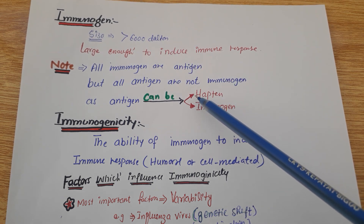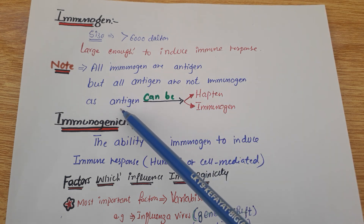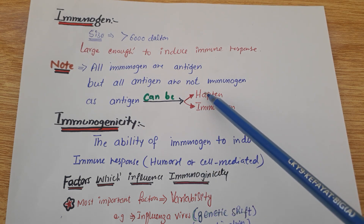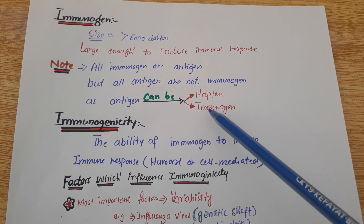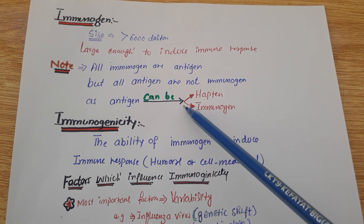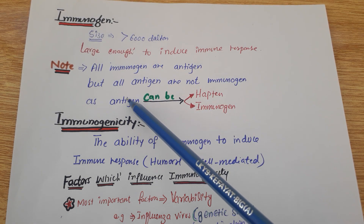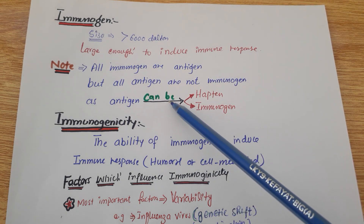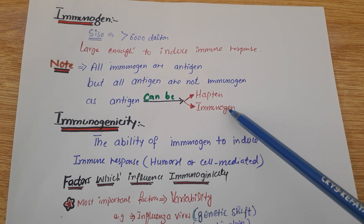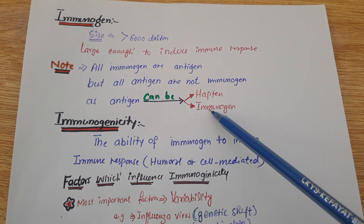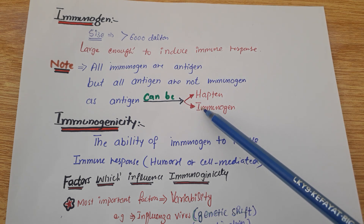A hapten cannot induce an immune response. Now, as you can see, this antigen can be a hapten or an immunogen. All immunogens are antigens, but all antigens are not immunogens, because an antigen can also be a hapten. Go by this way — all immunogens are antigens, but all antigens are not immunogens.